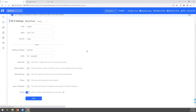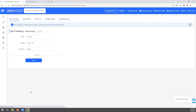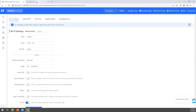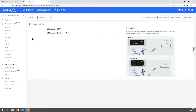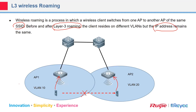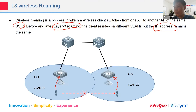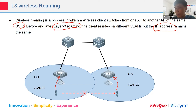A participant asks: Can you explain how devices decide to change the client from one AP to another — is it based on signal strength or what happens when it moves to another AP?